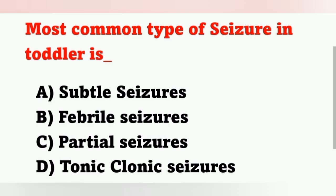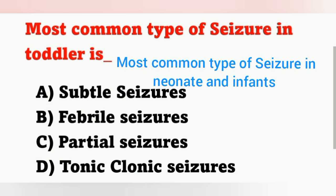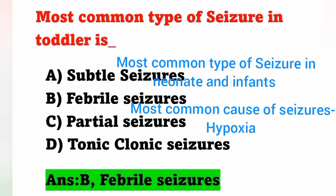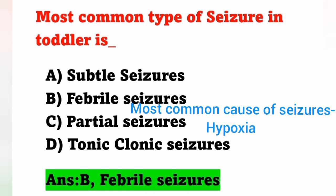Next question: Most common type of seizure in toddlers is? Options: A) Subtle seizure, B) Febrile seizure, C) Partial seizure, D) Tonic-clonic seizure. The most common type of seizure in toddlers is febrile seizure. Option B is correct. The toddler period is 1 to 3 years. The most common seizure in neonates and infants is subtle seizure. The most common cause of seizures is hypoxia.